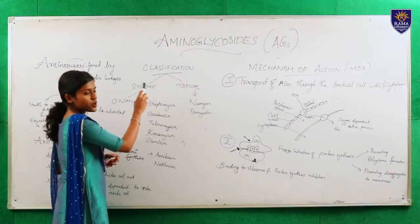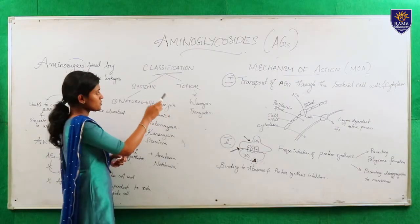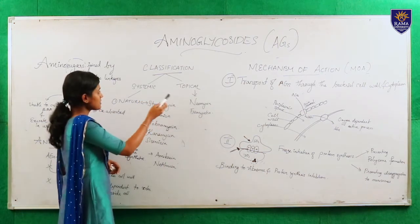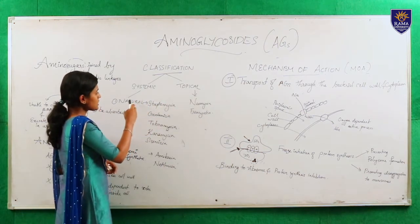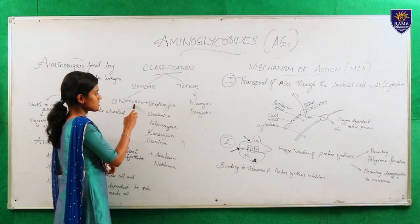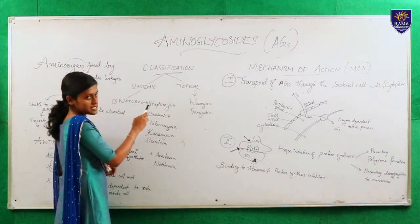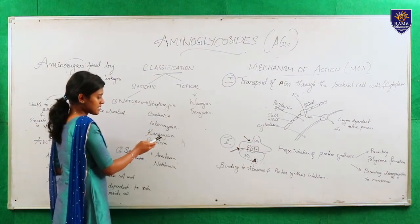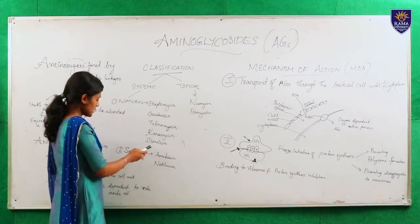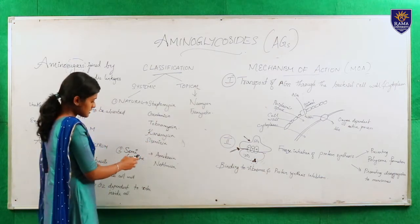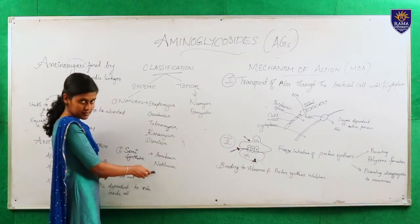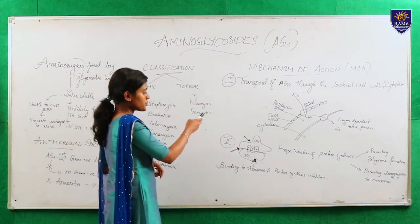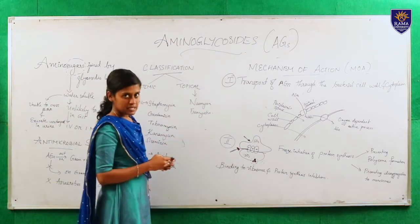Aminoglycosides are broadly divided into systemic aminoglycosides and topical aminoglycosides. Systemic aminoglycosides consist of natural derivatives such as streptomycin, gentamycin, tobramycin, kanamycin and sisomycin. The synthetic derivatives are amikacin and netilmycin. The topical agents are neomycin and framycetin.